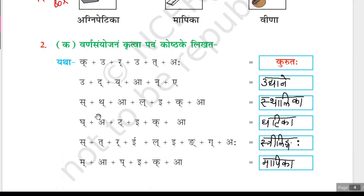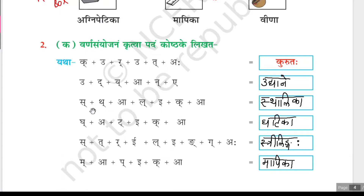Next: o plus idh plus eyi plus aa plus enna plus aha gives uddiyana. And inna plus e is ne, so uddiyan. Next: isth plus ith plus aa plus il plus i plus ikk plus aa gives sthalika. And ill plus e is li, ikk plus aa is ka, so sthalika. Next: igk plus aa plus ith plus e plus ikk plus aa gives gatika.